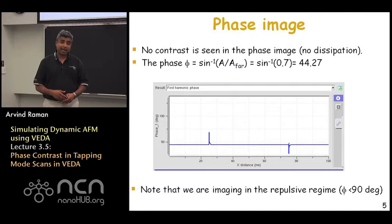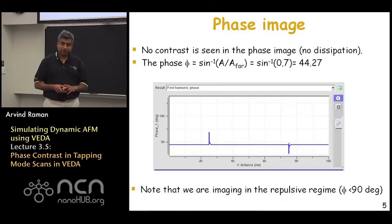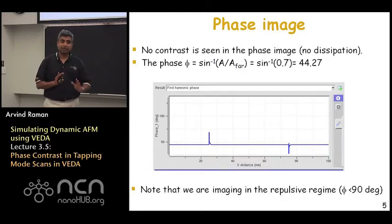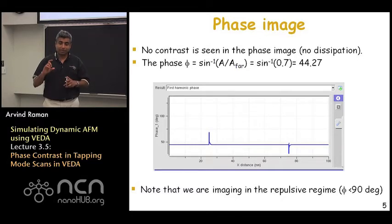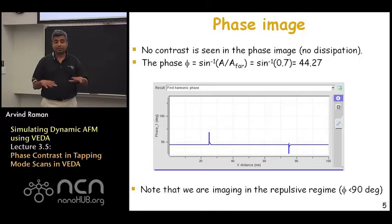When one plots the phase lag as a function of scan length, one sees that the phase lag is consistently below ninety degrees over both the substrate and the feature. There are little hiccups that happen at the transition from substrate to feature and back — that is expected due to transients as the controller tries to adjust the amplitude back to its intended set point ratio. Other than those edge hiccups, the phase lag is consistently under ninety degrees, so we can claim that over the entire image we are imaging in the repulsive regime.